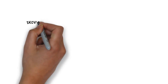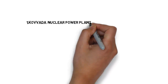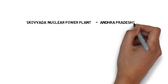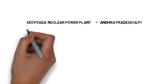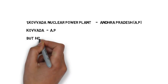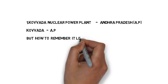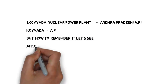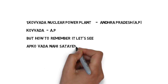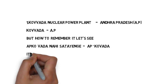Friends, here are the nuclear power plants. First one: Kovada nuclear power plant. It is in Andhra Pradesh. Andhra Pradesh short form is AP, so try to remember Andhra Pradesh as AP. Kovada is in AP.